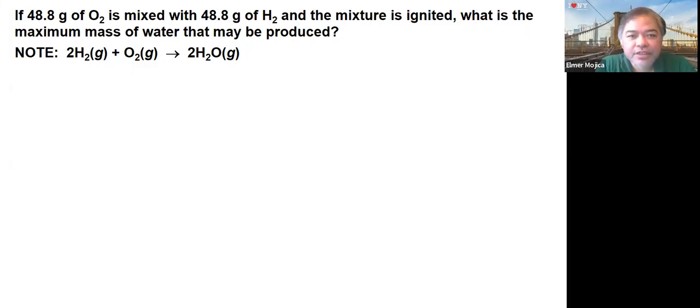Let's solve a limiting and excess reactant problem. Given 48.8 grams of oxygen mixed with 48.8 grams of hydrogen, and the mixture is ignited, what is the maximum mass of water that may be produced? The reaction is 2H₂(g) + O₂(g) → 2H₂O(g).